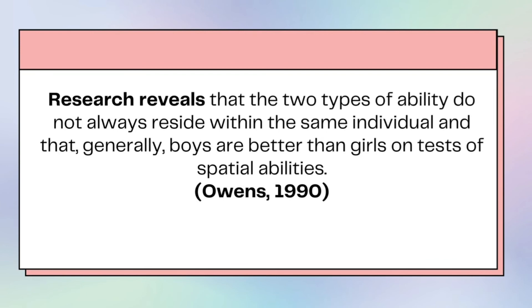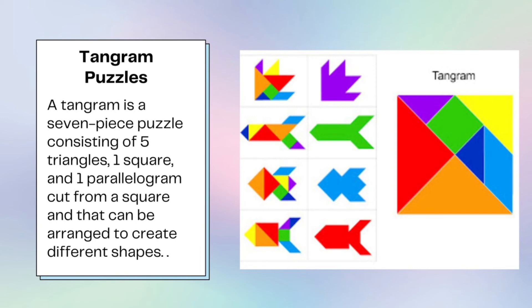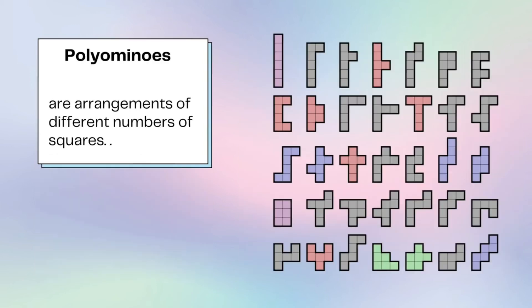The second ability is orientation, which includes the ability to note positions of objects and to maintain the accurate perception of the objects under different orientations. Research reveals that the two types of ability do not always reside within the same individual, and that generally, boys are better than girls on tests of spatial abilities. Next is Tangram puzzles. A Tangram is a seven-piece puzzle consisting of five triangles, one square, and one parallelogram cut from a square, and that can be arranged to create different shapes. The last one is polyominoes. Polyominoes are arrangements of different numbers of squares.